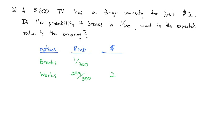If it breaks, they have to pay for the TV. And so the TV would cost the company $500. But I want to be careful. It's not just negative 500 in this case, because the customer has still paid $2 to the company for the warranty. So the customer pays $2, and then the company pays $500 back to replace the TV.